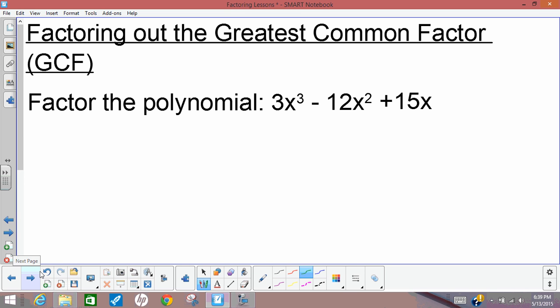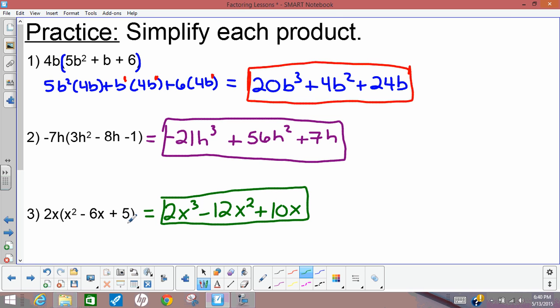Okay, so the reason we went over the distributive property is because we want to start factoring things. So factors are numbers, or in this case, monomials or polynomials that got multiplied together to give us a polynomial. So I'm going to go back here, and we'll just use number 3 as an example.